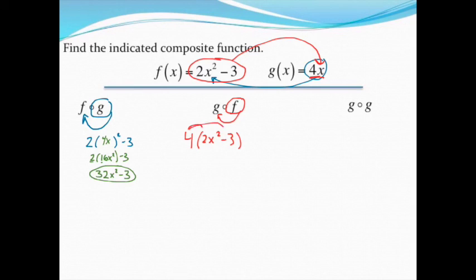I'll go ahead and distribute. I end up with 8x squared minus 12, and that's as simplified as it can get. I can see that, yes, once again, the order does matter. I have a brand new, completely different composite function when I do this in a different order.